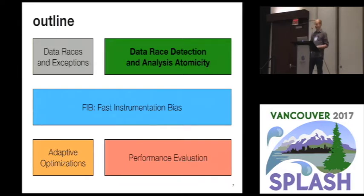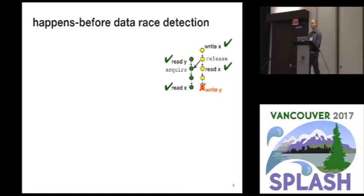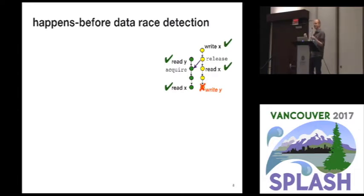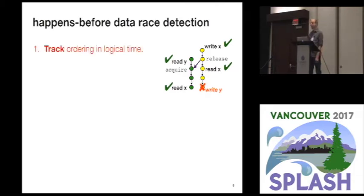Let's take a look at the job that the data race detector would have to do. If we're going to reason about data races in a multithreaded program, we'll use the happens-before relation, which is a partial order over events in the execution that allows us to answer questions about which events — including memory accesses — are or are not ordered with respect to each other via synchronization or other means. To build a data race detector, we need to track this relation, and to do that we're going to track some notion of logical time.